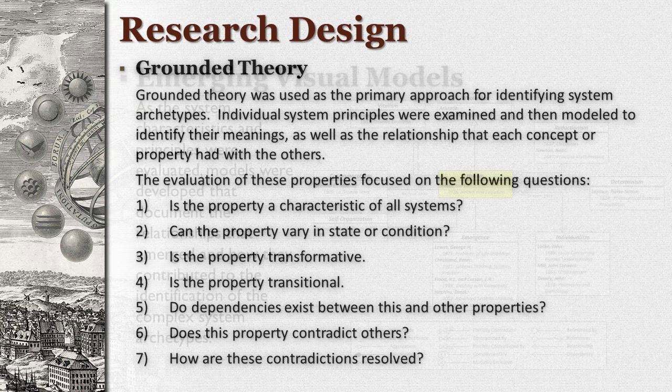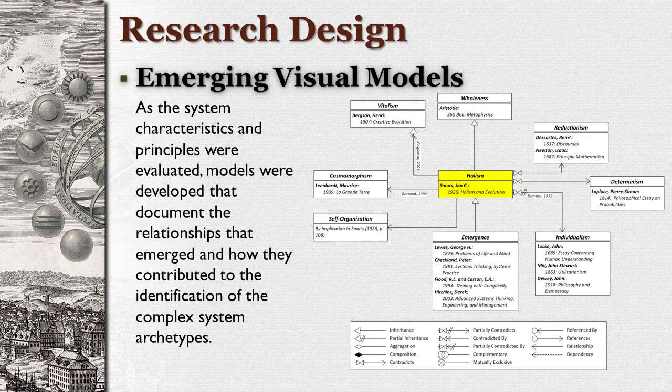Do dependencies exist between this and other properties? Does this characteristic contradict others? If so, how are these contradictions resolved? As the collection of system principles were evaluated, relationships were compiled into a collection of visual models. Each model documents the originator of the concept, as well as its heredity, its progeny, related and contributing concepts, and in some cases, its contradictors.